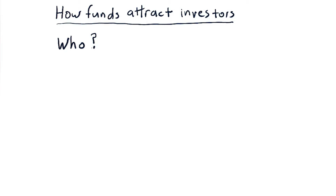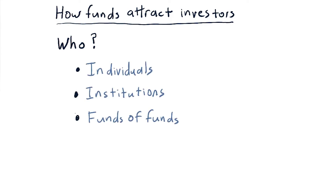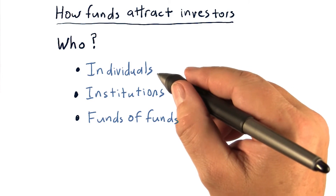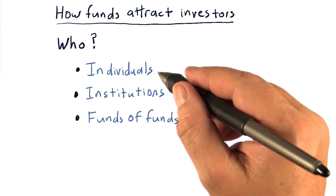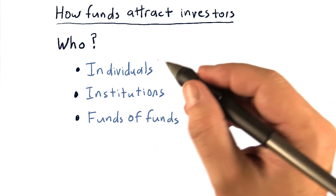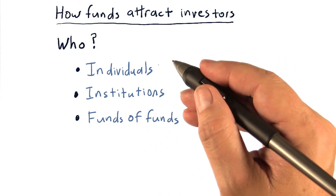From here on out, I'm going to assume that you want to be a hedge fund manager. One of your first tasks as a hedge fund manager is to get investors. So who might your investors be? There are three major types of investors in hedge funds. The first type is individuals — a single person that wants to invest in a fund. These are typically very wealthy folks. Keep in mind that hedge funds typically can only have up to 100 investors.